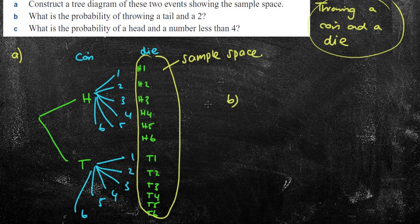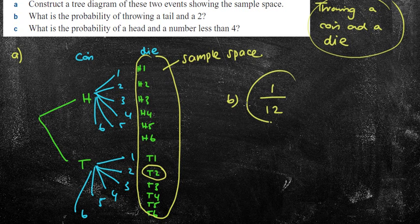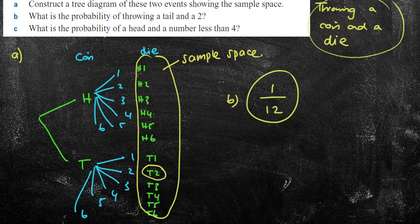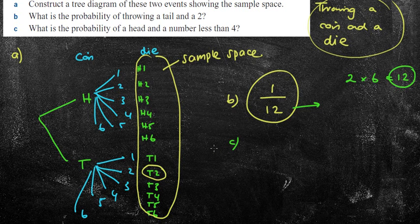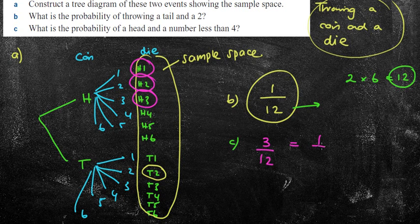So that's part A done. Part B, what is the probability of throwing a tail and a 2? Well, that's a tail and a 2. Therefore, I've only got one option of doing that. We've now got 12 options, so I've got 1 in 12. Remember, if you're trying to find out that bottom number, all the possible outcomes, I've got 2 outcomes for my coin, I've got 6 outcomes for my dice. Therefore, I've got 12 outcomes altogether. Part C, what is the probability of a head and a number less than 4? That's less than 4, that's less than 4, that's less than 4. No, that's exactly 4. Therefore, I have 3 in 12 chances, or you could write 1 in 4.